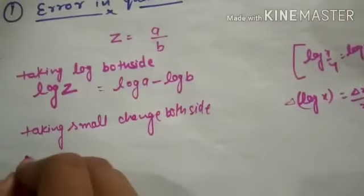Next type of error is error in power of any physical quantity. Consider physical quantity Z such that it equals A to the power n, where A is any other physical quantity. To find the error in this quantity, first take log both sides. Taking log both sides, you will get log Z equals n log A.